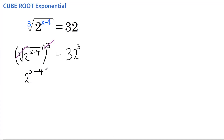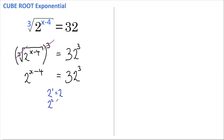This still equals 32 cubed. Now you may recognize 32 as being on our powers of 2 table, where 2 to the power of 1 equals 2, and 2 to the power of 2 equals 4.